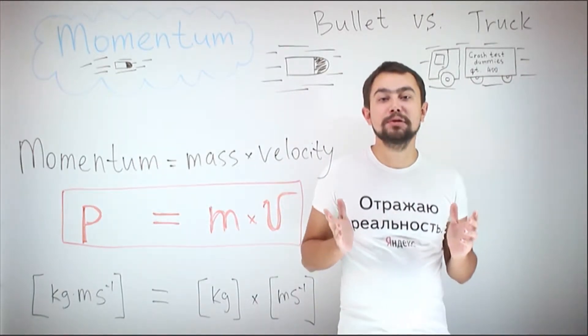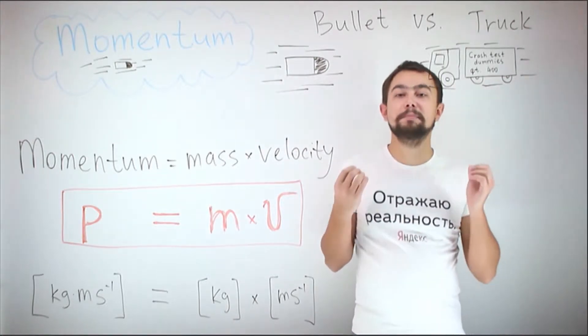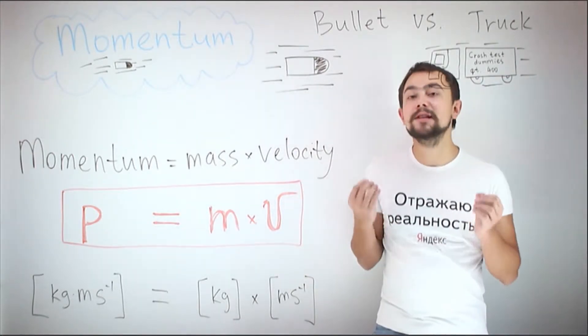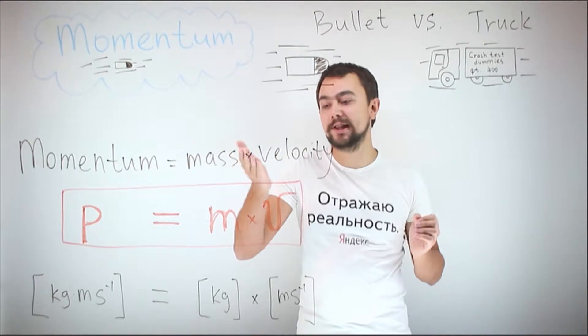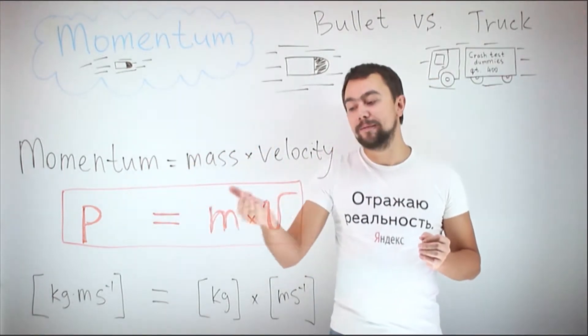Momentum is a useful quantity when speaking about the unstoppability of the object. Momentum is defined as mass times velocity. P equals mv.